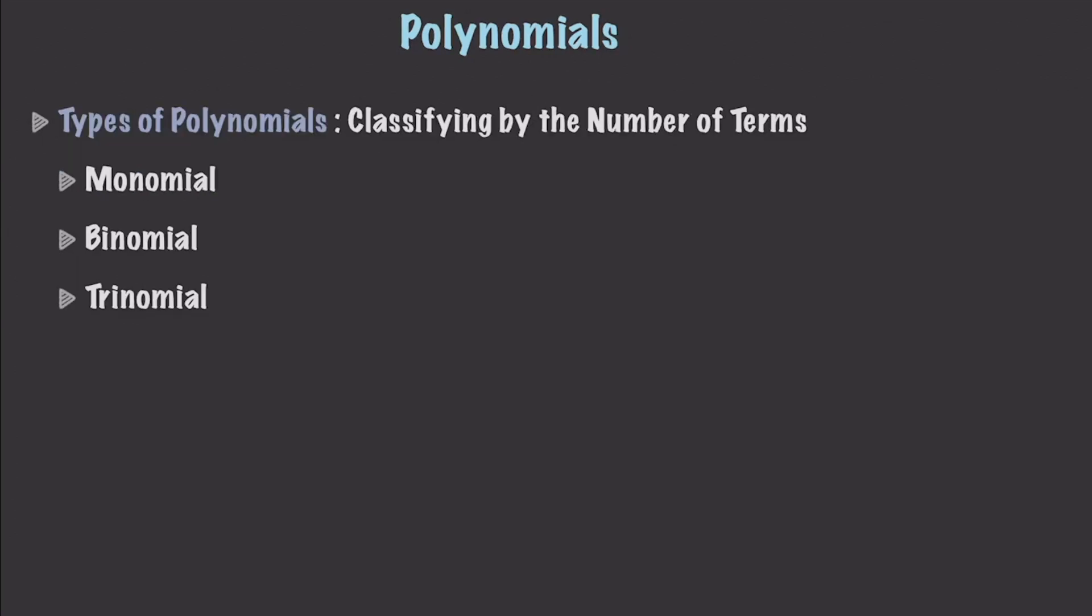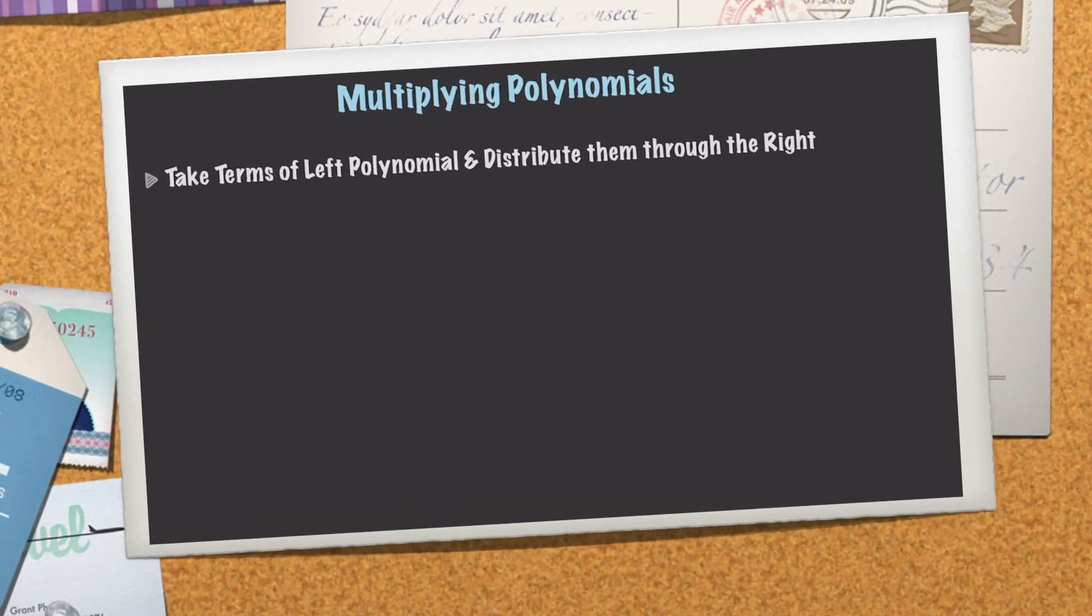There are many different types of polynomials, and they are also classified by the number of terms. You have a monomial, an example of that would just simply be x, there's just one term. Then you have binomials, which x plus 1 would be an example of. You have two terms, and so forth. And now you have the basic jargon down in regards to polynomials.